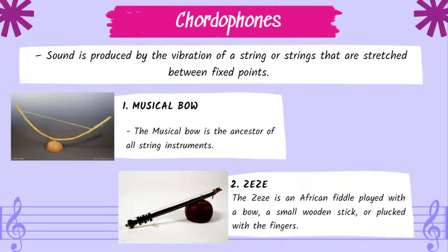The fourth classification is the chordophone family, where sound is produced by the vibration of strings stretched between fixed points. Two examples: the musical bow — the ancestor of all string instruments — and the Zese, an African fiddle played with a bow and small wooden stake or plucked with the fingers.